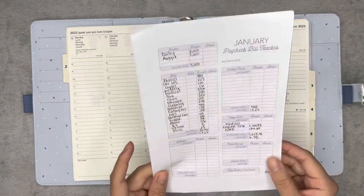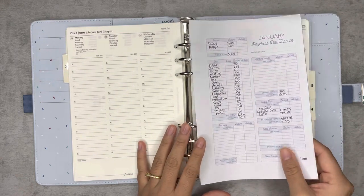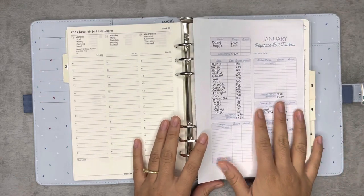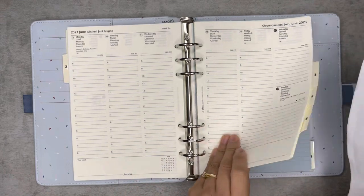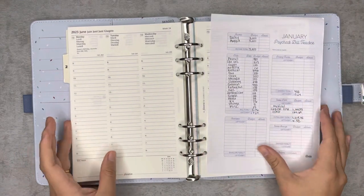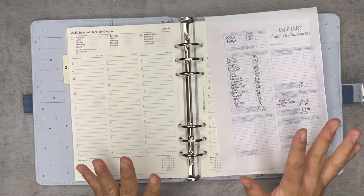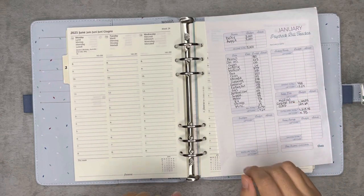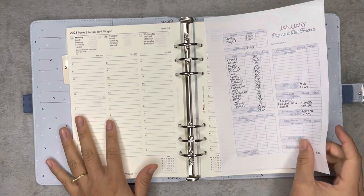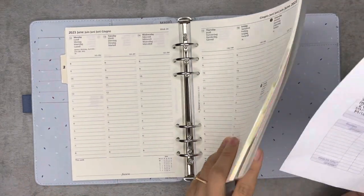I then cut the extra paper and I plan on hole punching it and inserting it in here. That's one of the reasons why I went with this style, so that I could add more budget trackers, savings trackers, sinking funds, all of that in here as I please.